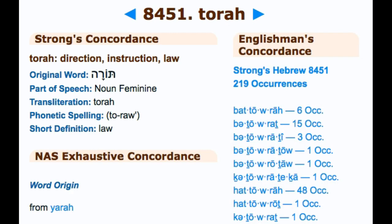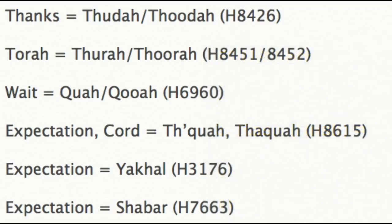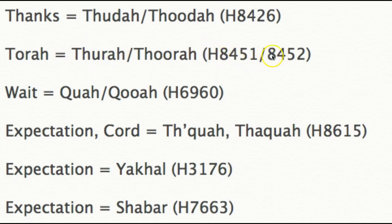In Strong's H8451, the word commonly called Torah — the only difference from Thuda is replacing the Dalet with a Rosh, changing D to R. This word means instruction, law, or direction. It has four characters: Thu-U-Rosh-Hey. So when you put it together, you get Thura — not Torah. Thanks is Thuda, and Torah is Thura.